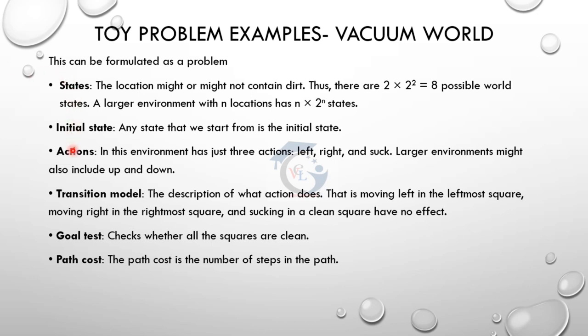There is a set of states and a set of actions. The first state - what is the state? One environment is dirty and we will clean it up. The problem is dirty, and the goal is to clean it up effectively. A location might or might not contain dirt. With 2 locations, there are 2 into 2 power 2, which equals 8 total states.